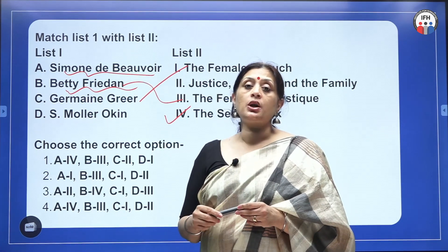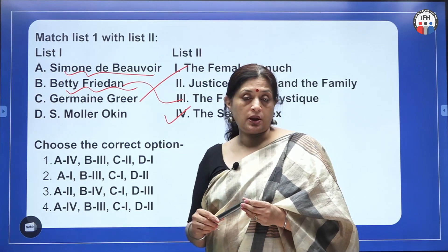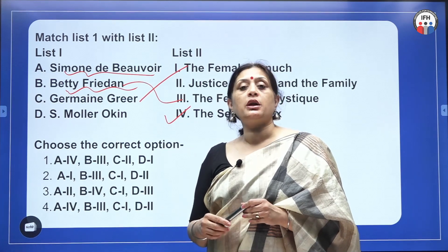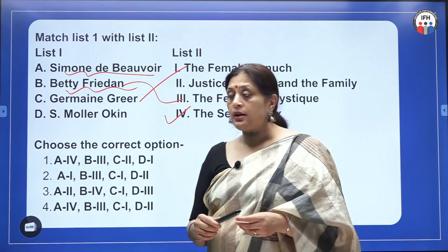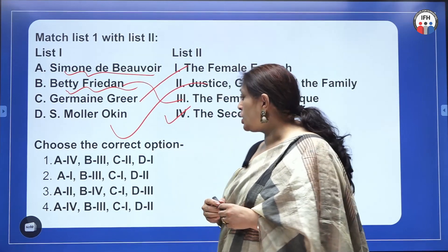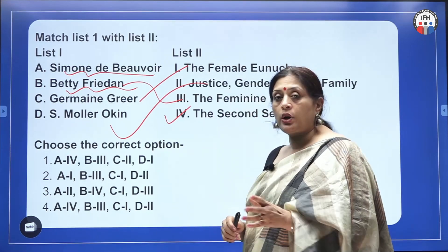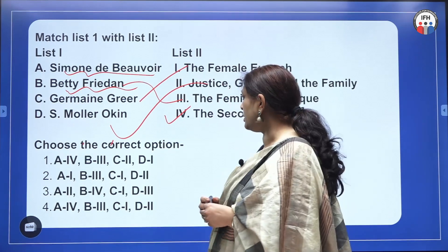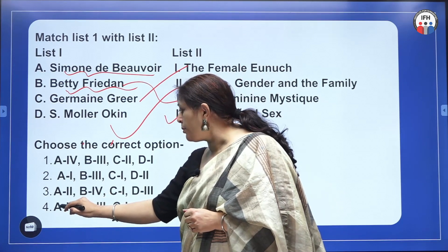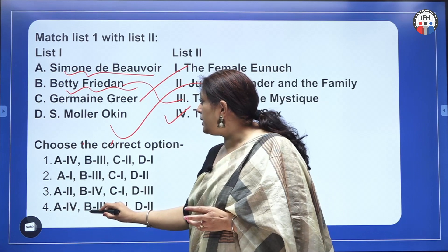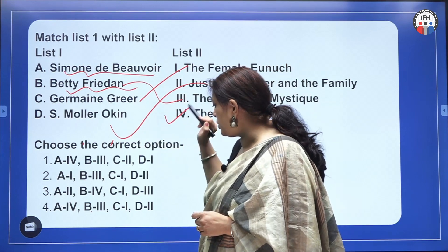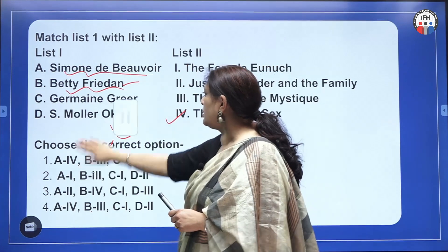Susan Moller Okin is a very important feminist scholar because she has given a critique of Rawls's theory of justice from a feminist point of view, based on the concept of ethics of care. Her famous book is Gender, Justice and Family. The correct answer is option 4: Simone de Beauvoir – The Second Sex; Betty Friedan – The Feminine Mystique; Germaine Greer – The Female Eunuch; and Susan Moller Okin – Gender, Justice and Family.